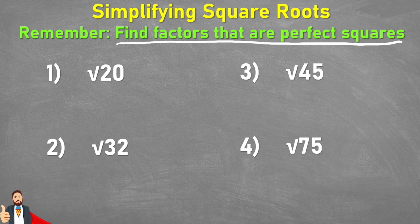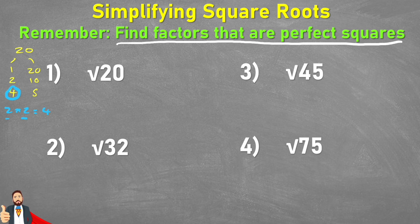The first thing we're going to do is find some factors of 20. Let's start by drawing our factor tree. So 20 could be made up of 1 and 20, or 2 and 10, or 4 and 5. These are all our factors, and what I'm looking for is a perfect square. 4 is a perfect square because 2 times 2 equals 4. So we're going to use this factor pair and say that the square root of 20 is equivalent to the square root of 4 times 5.